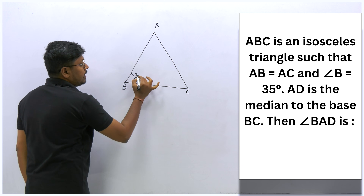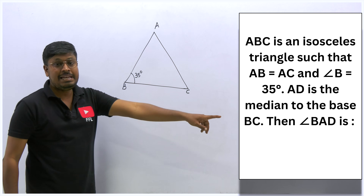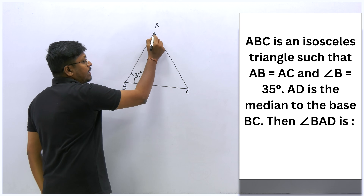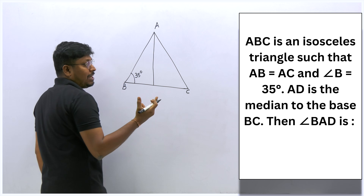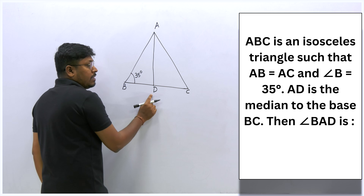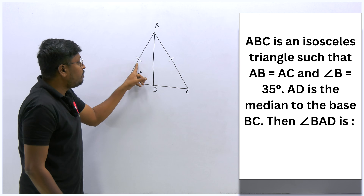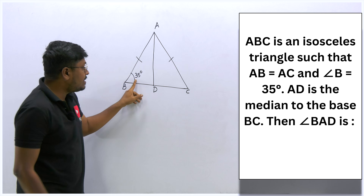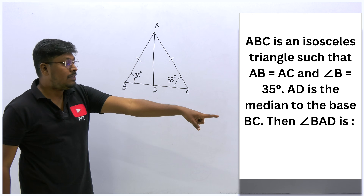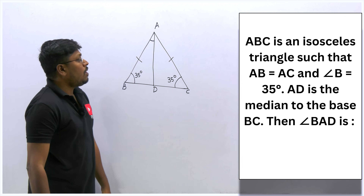Since it is an isosceles triangle and AD is the median, drawing the median splits the triangle into two equal halves. The median from A bisects angle A. Since AB equals AC, both base angles equal 35 degrees. Our target is to find angle BAD — just the smaller angle at A.